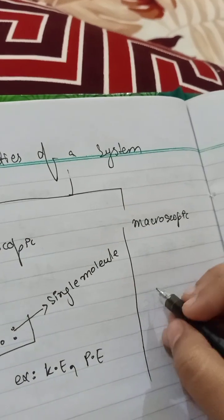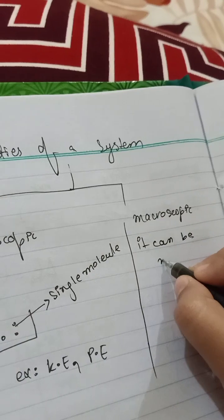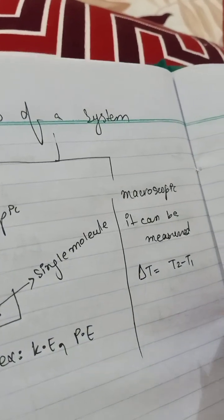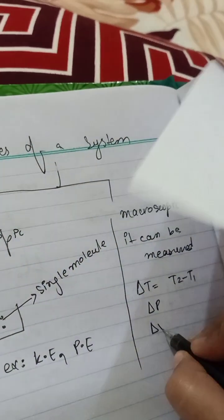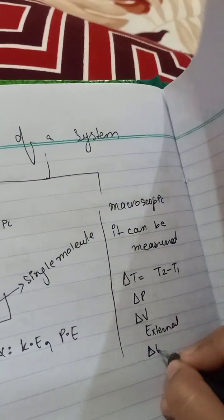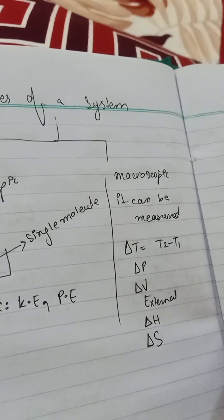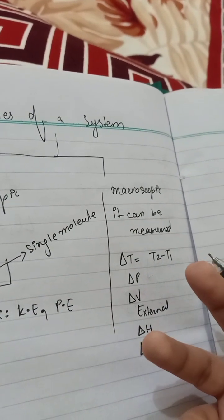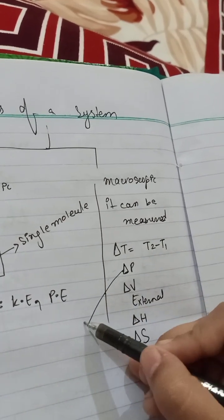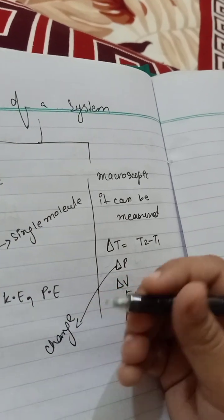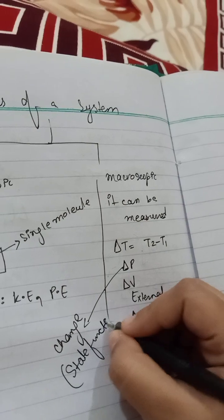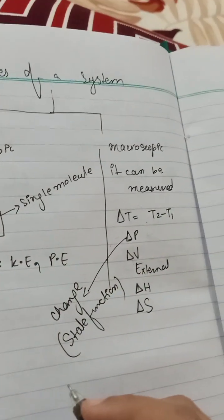The macroscopic property can be measured and it has definite values. For example, you can find the value of temperature, you can find the value of pressure, you can find the value of volume, you can find the value of internal energy, you can find the value of enthalpy, you can find the value of entropy. So these are what are called state functions — their variables can change, that is, they can be changed by taking final minus initial to get the change. So the change or variable is called the state function.